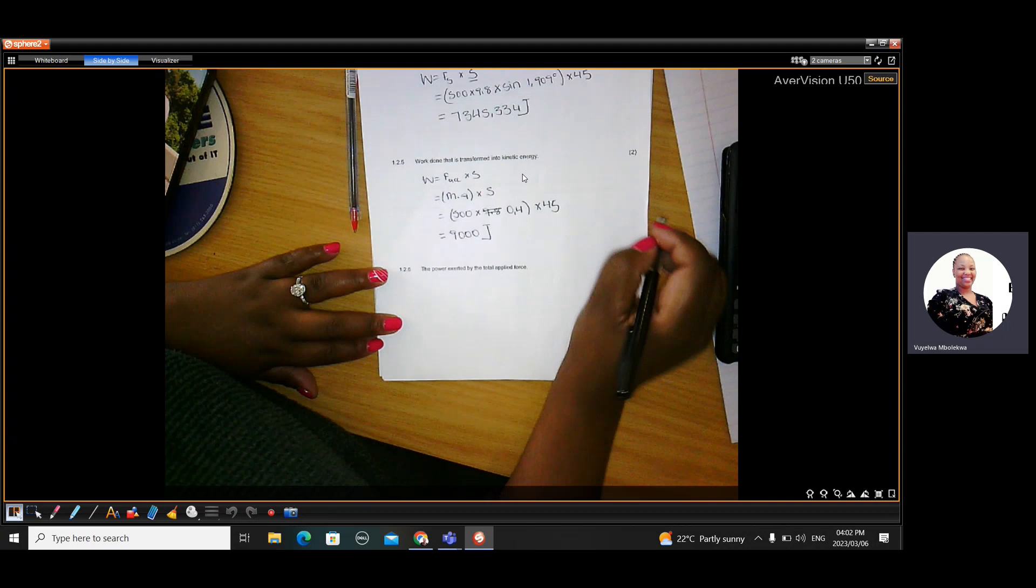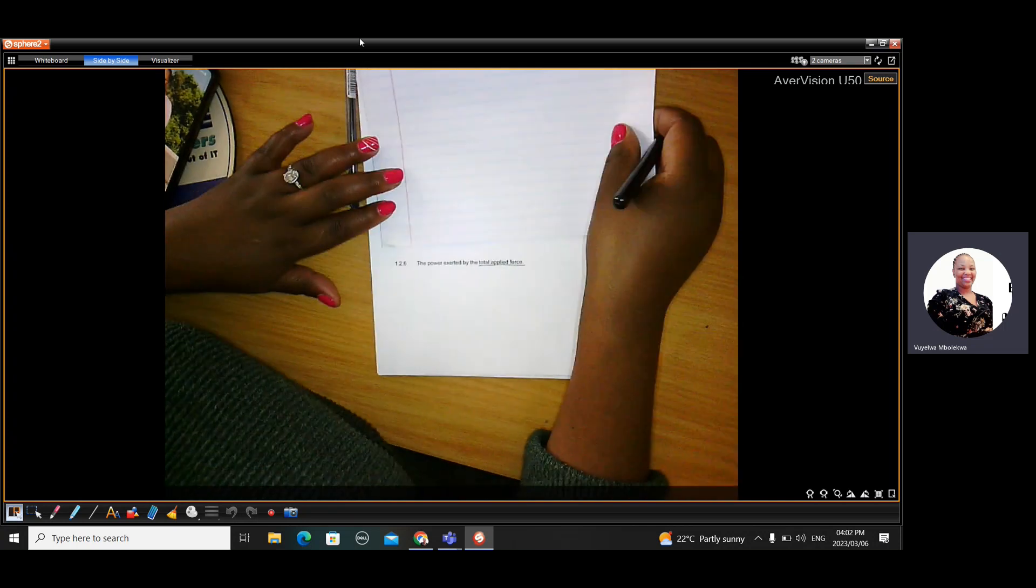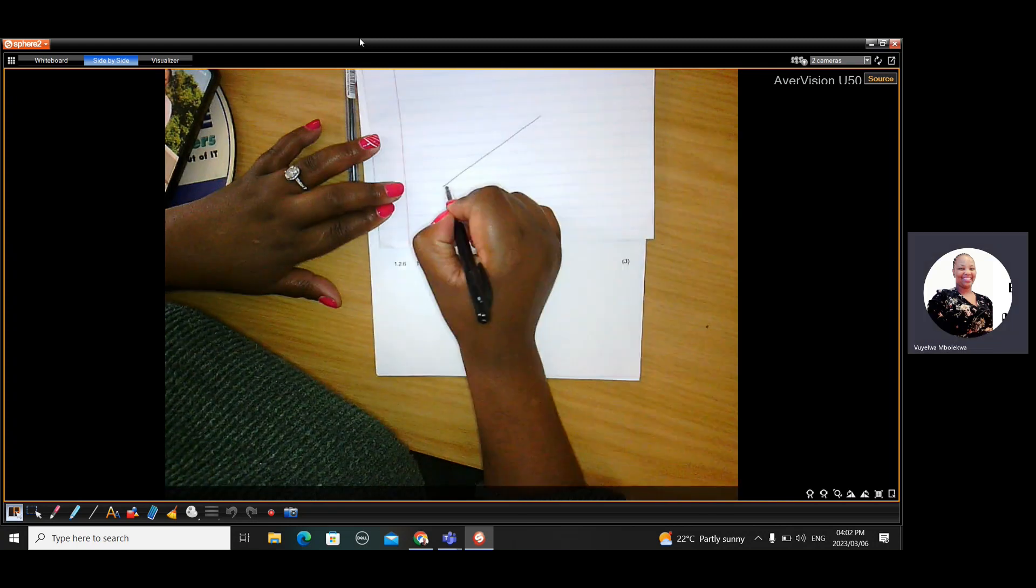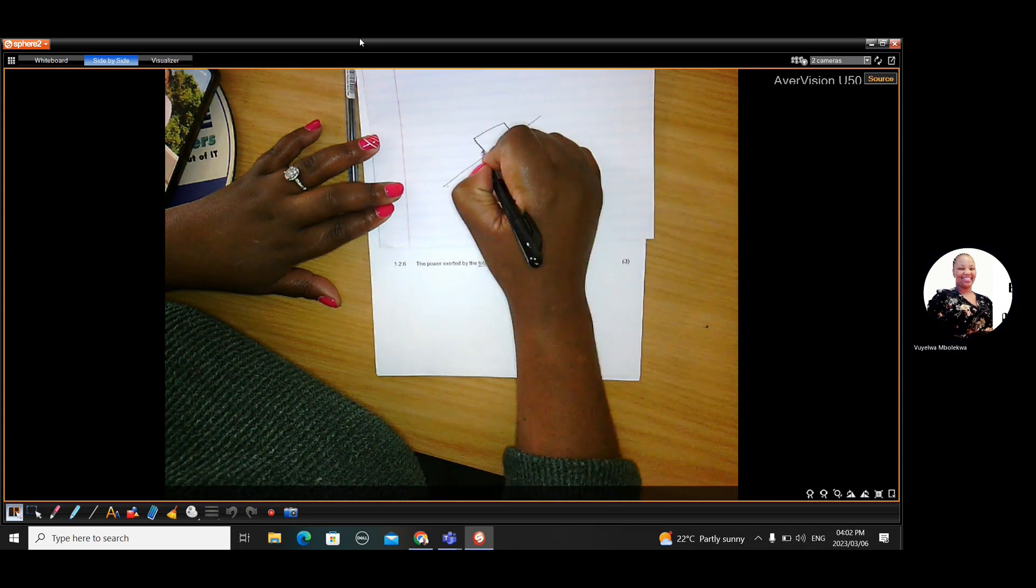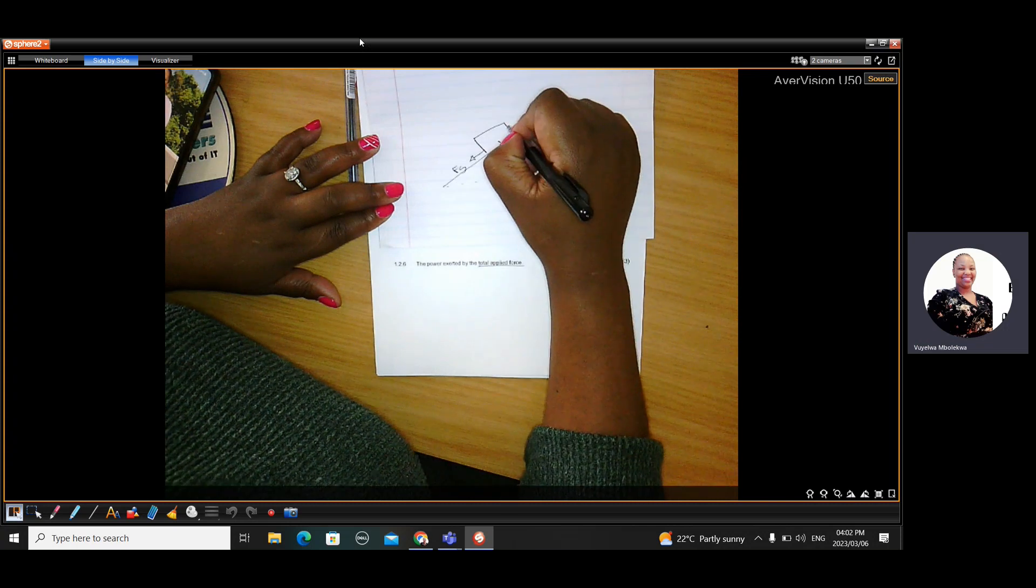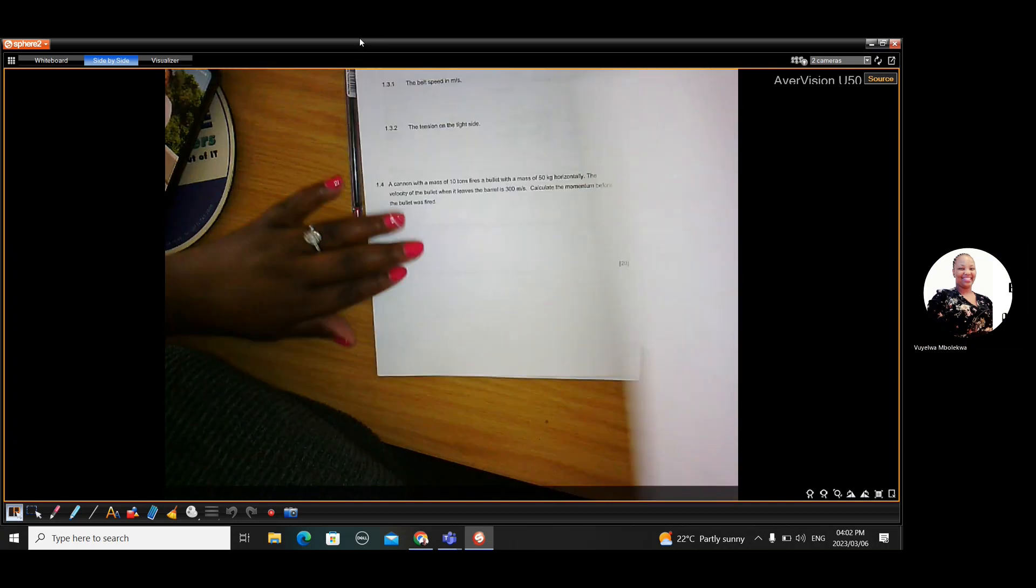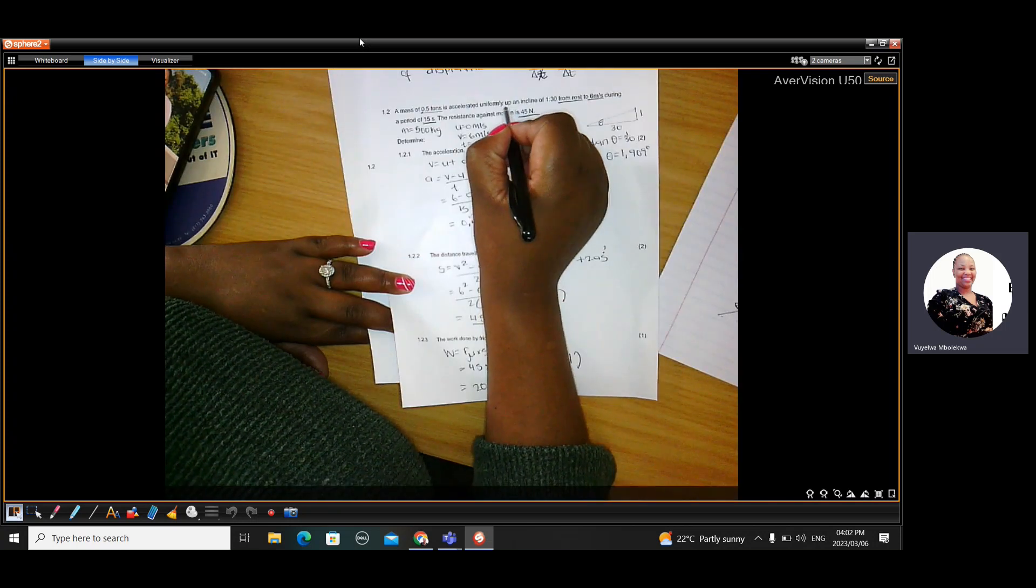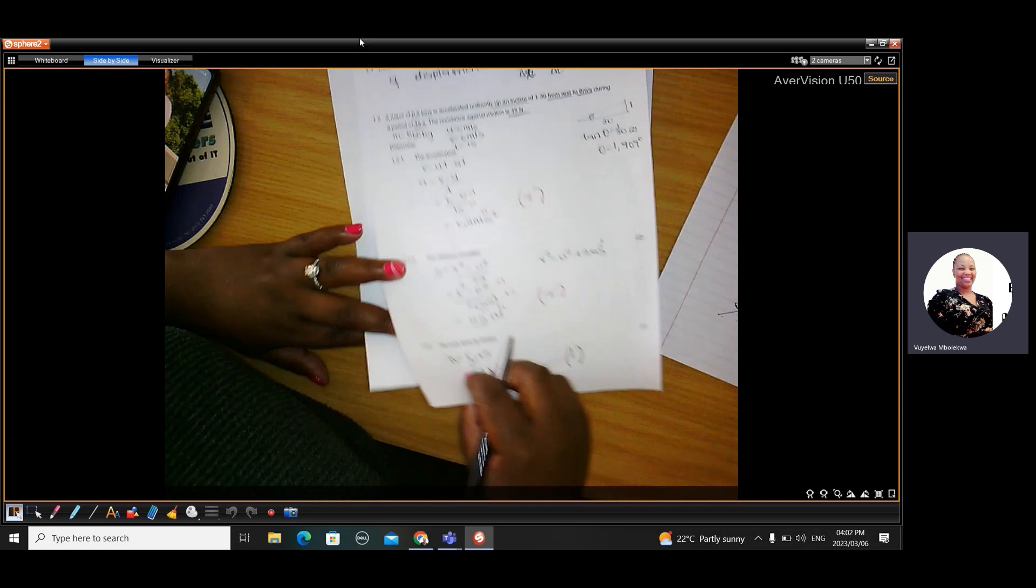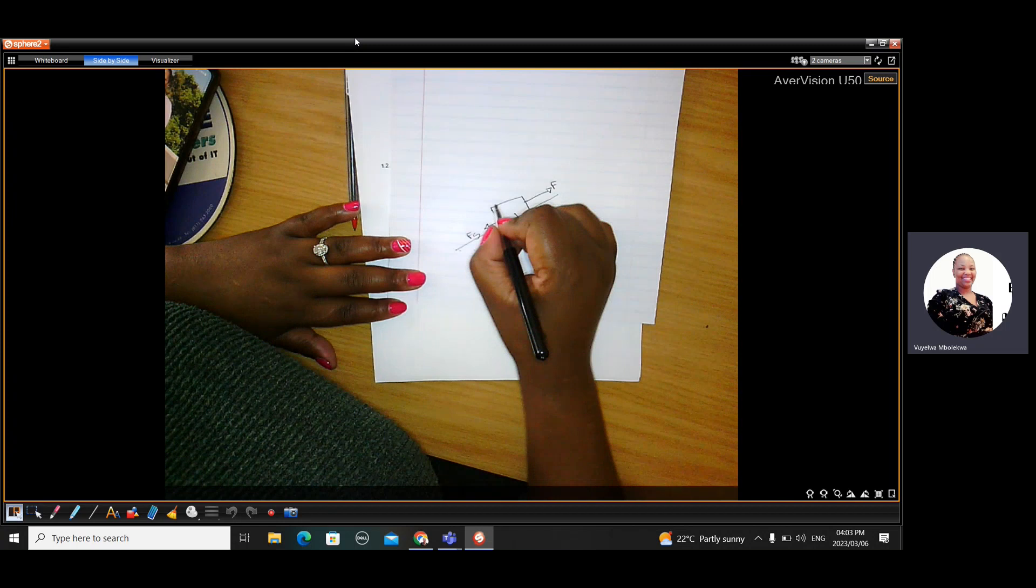Then they ask for power executed by the total applied force. Now, if we are asked to sketch this, this is how it will look like. You've got this object on a slope. So it's got FC here. It's got FS there. It's moved upwards. The question was saying it was accelerated up an incline. So it means the applied force was moving upwards. So if the applied force is moving upwards like that, it means the frictional force is moving downwards.